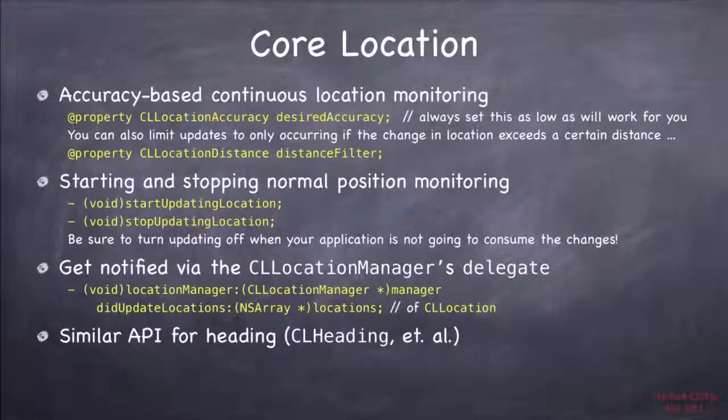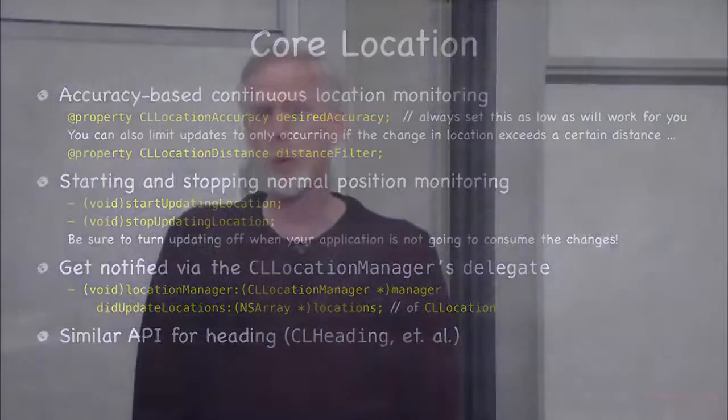So then you start getting the updates by just calling start updating location, and your delegate will start getting sent messages based on the accuracy and the filter that you specify for distance. What does that delegate method look like? Location manager did update to location from location is one of the ones. There's actually some other ones that you could get sent, so you want to check the documentation on this one. But this is the basic one where it's saying, I got a new location, here it is. That location of course will have accuracy and all the time stamp, all these other things in there, and it just gives you the from location just for your own convenience, so you don't have to keep it if you just want to see the difference. So that's it, it's quite simple actually to use this location manager. It's also quite simple to drain the user's battery in about an hour. So be careful and know what you're doing here.